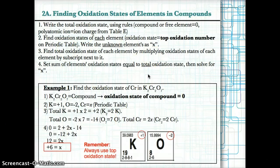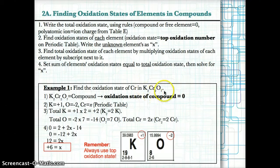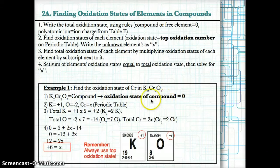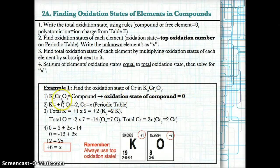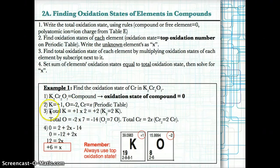Example one: find the oxidation state of Cr in K2Cr2O7. K2Cr2O7 is a compound, so its total oxidation state is zero. In step two, we find the oxidation states of each element. K's oxidation state from the periodic table is +1, O's oxidation state is -2, and Cr is what we don't know, so we set it as X.